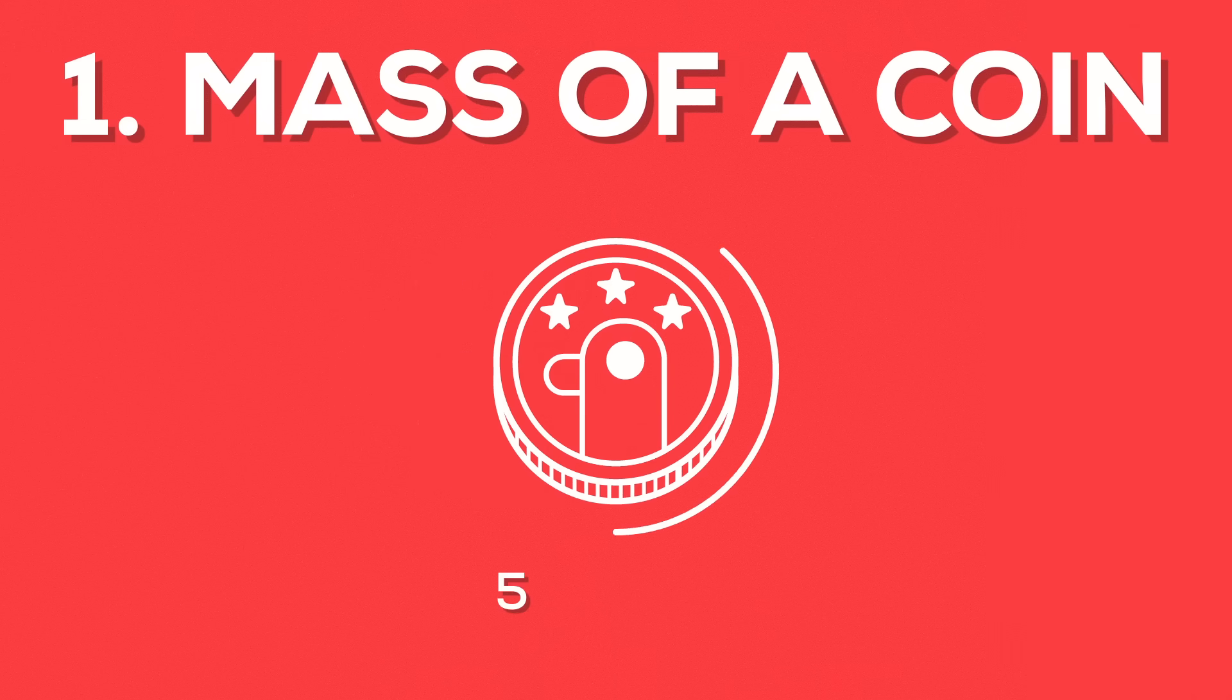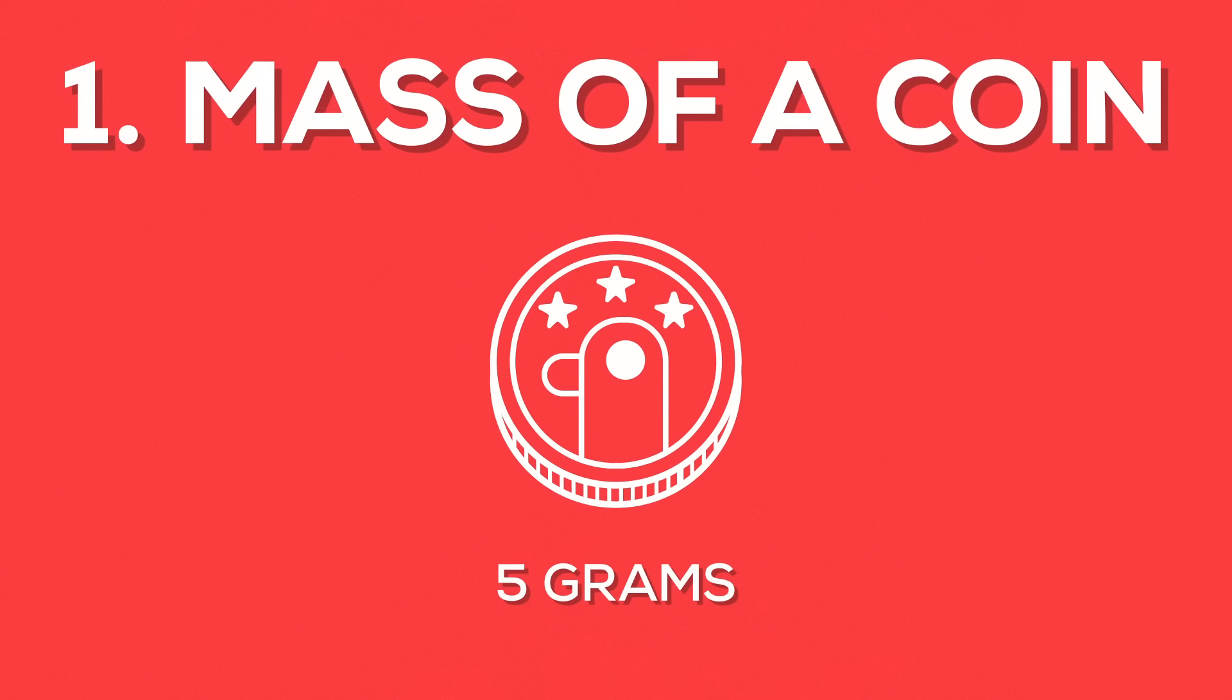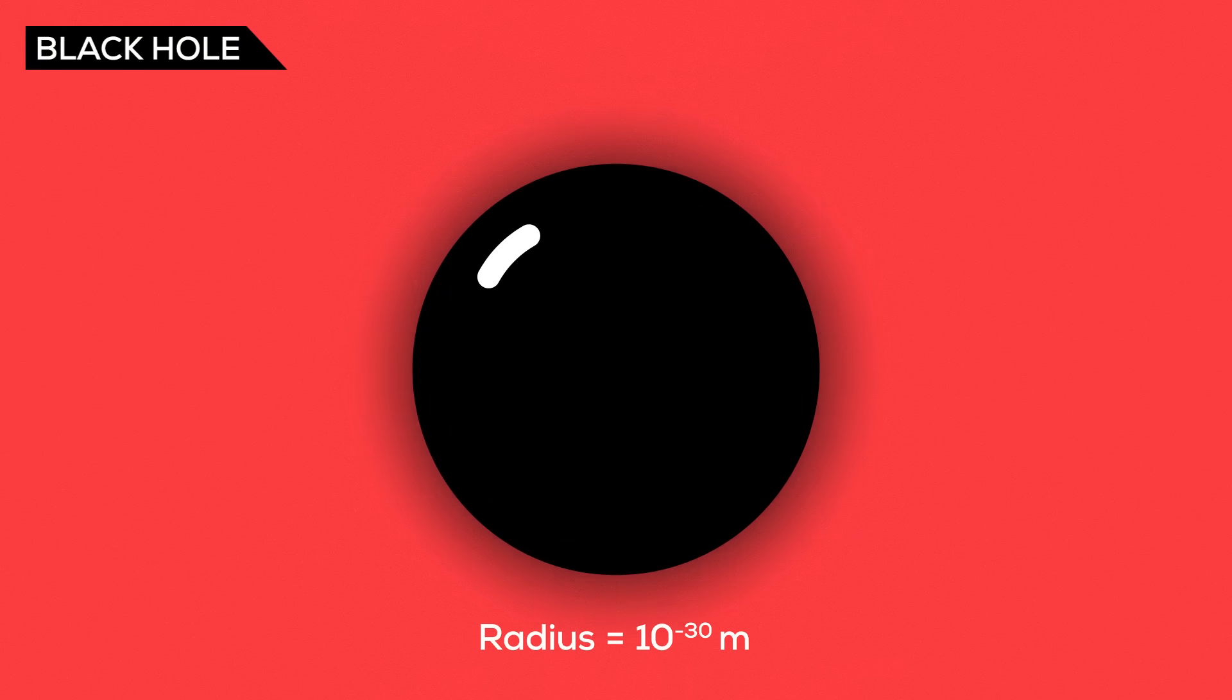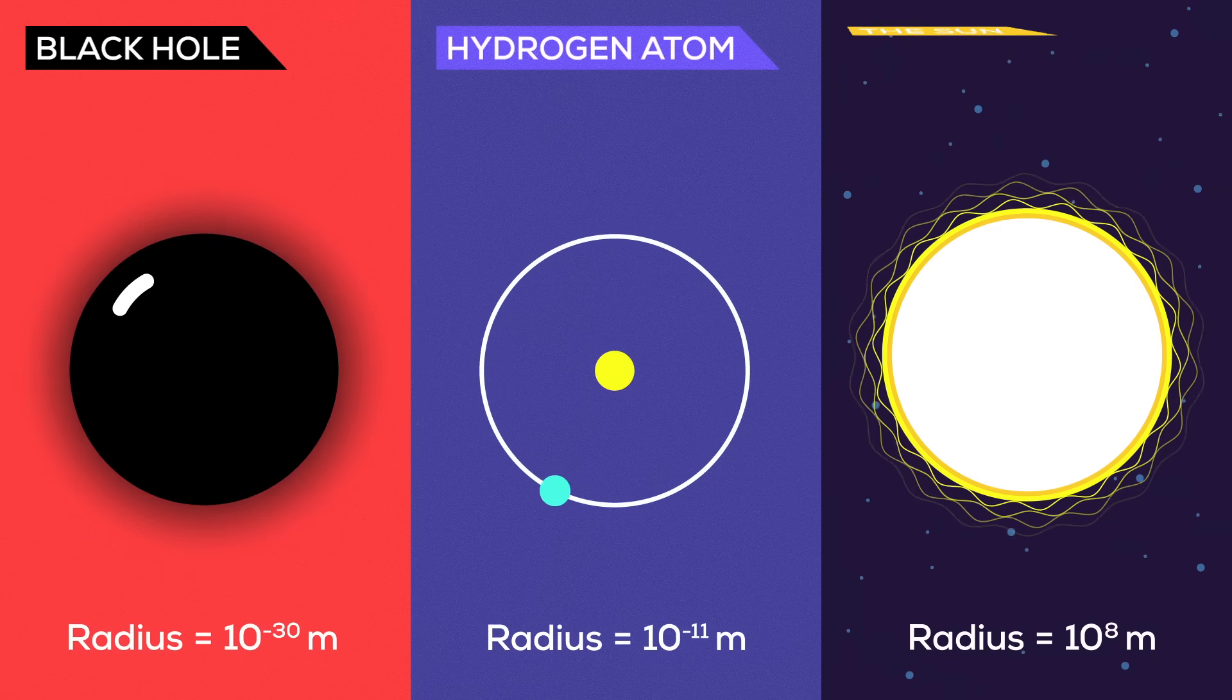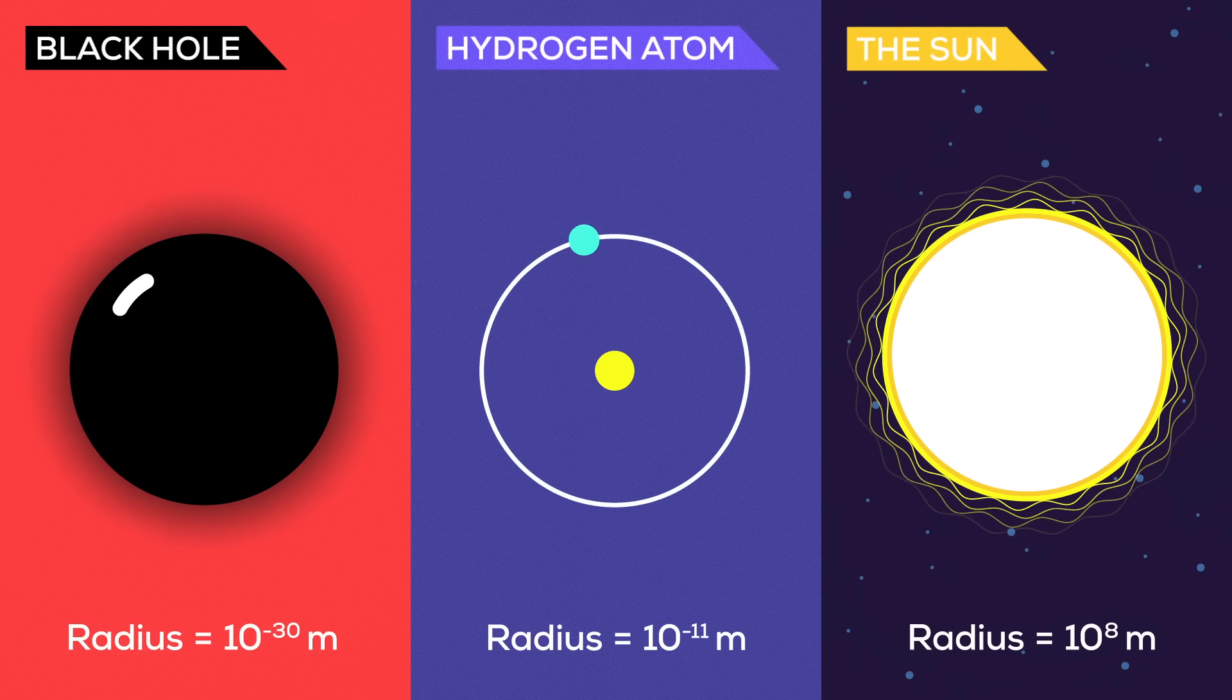Suppose a US nickel with a mass of about 5 grams magically collapsed into a black hole. This black hole would have a radius of 10 to the power of minus 30 meters. By comparison, a hydrogen atom is about 10 to the power of minus 11 meters. So the black hole compared to an atom is as small as an atom compared to the sun. Unimaginably small.